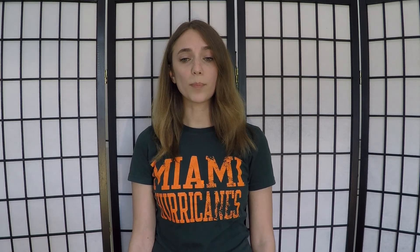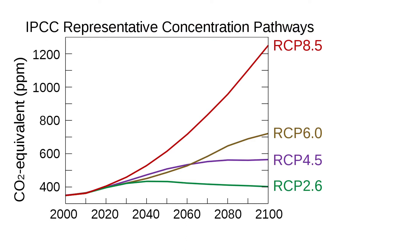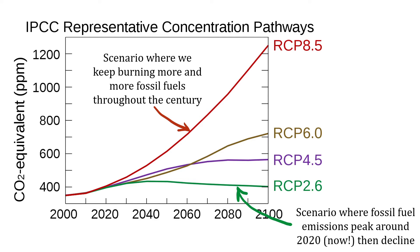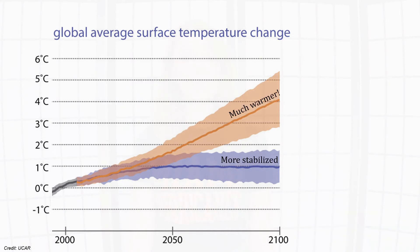With our collection of models that do well with hindcasting, we can try to predict the future. Scientists must consider different scenarios of human-caused climate forcings, like greenhouse gas concentrations. These are called representative concentration pathways, which are based on socioeconomic assumptions or predictions, giving us the range of possible trajectories of how we will emit carbon by the end of the century. If our consumption of fossil fuels peaked in 2020, the climate system will respond differently than if we continued on our current trajectory of burning more and more fossil fuels throughout this century.